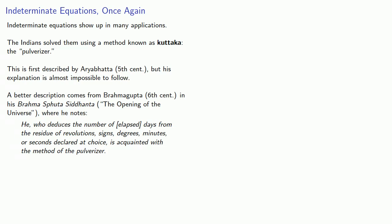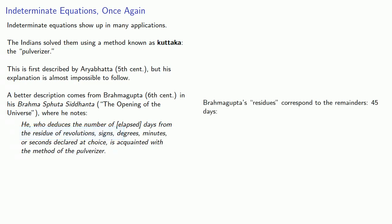Now, you might wonder about this term, residue of revolutions. Brahmagupta's residues correspond to the remainders. For example, 45 days — if we divide 45 by 7, we get 6 remainder 3. And so we might say that 45 days is 3 more than some number of weeks.